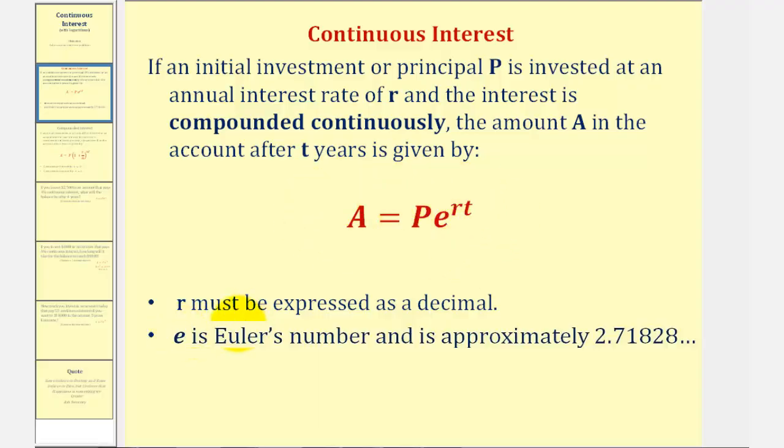R, the interest rate, must be expressed as a decimal, and the base E is called Euler's number, which is an irrational constant that's approximately 2.71828, and so on.